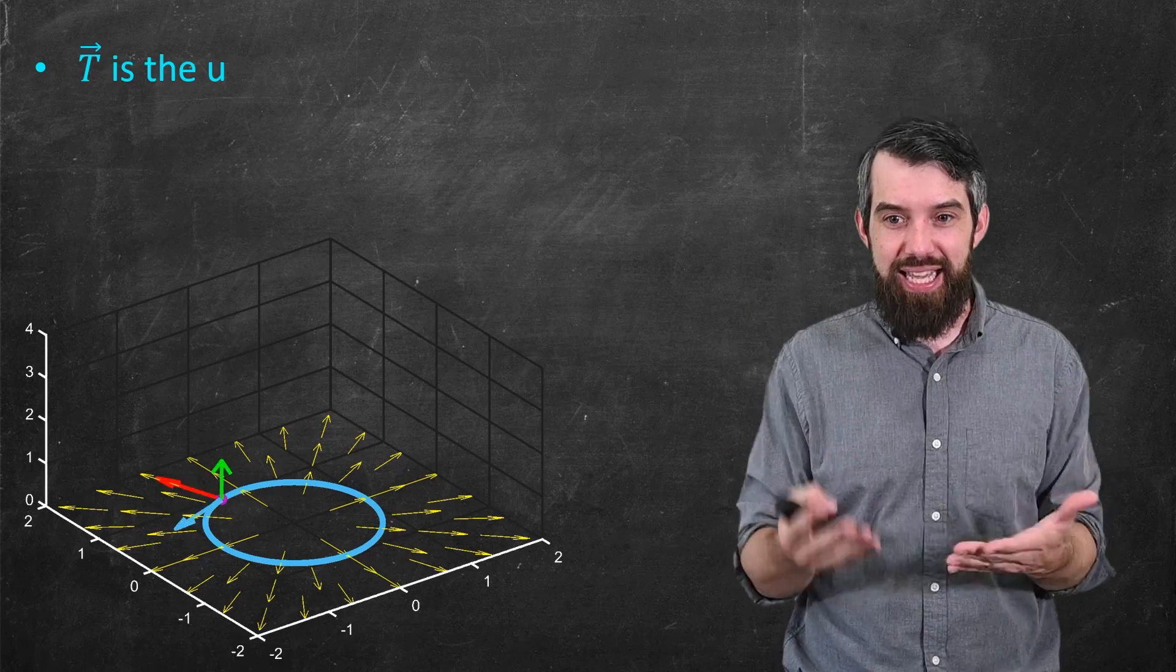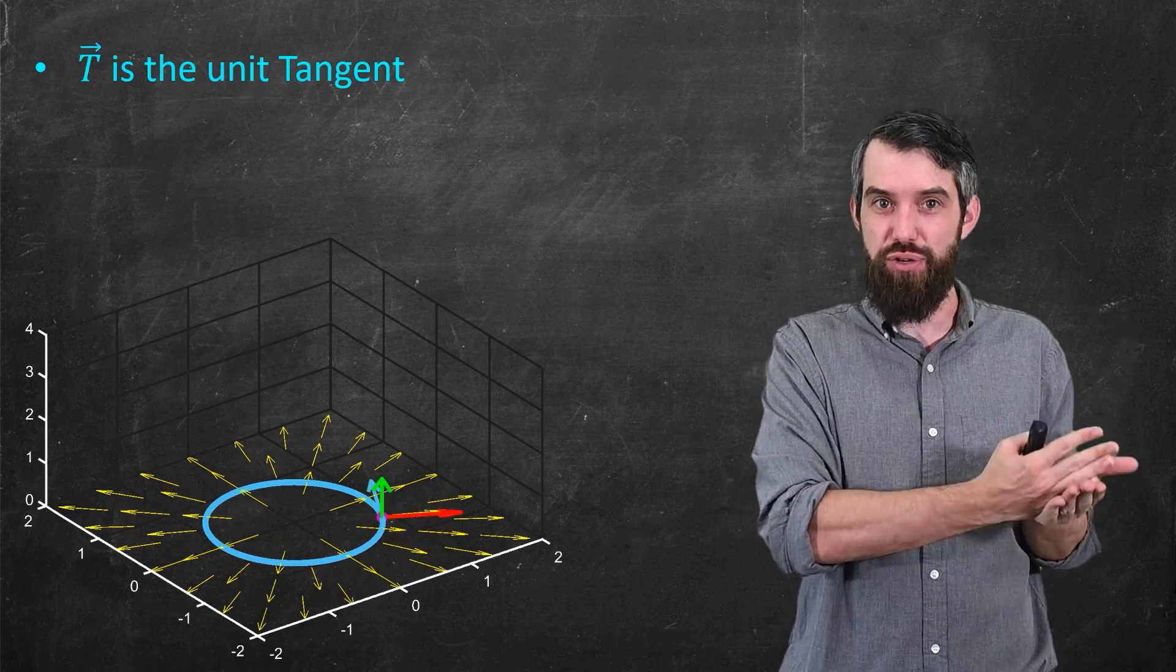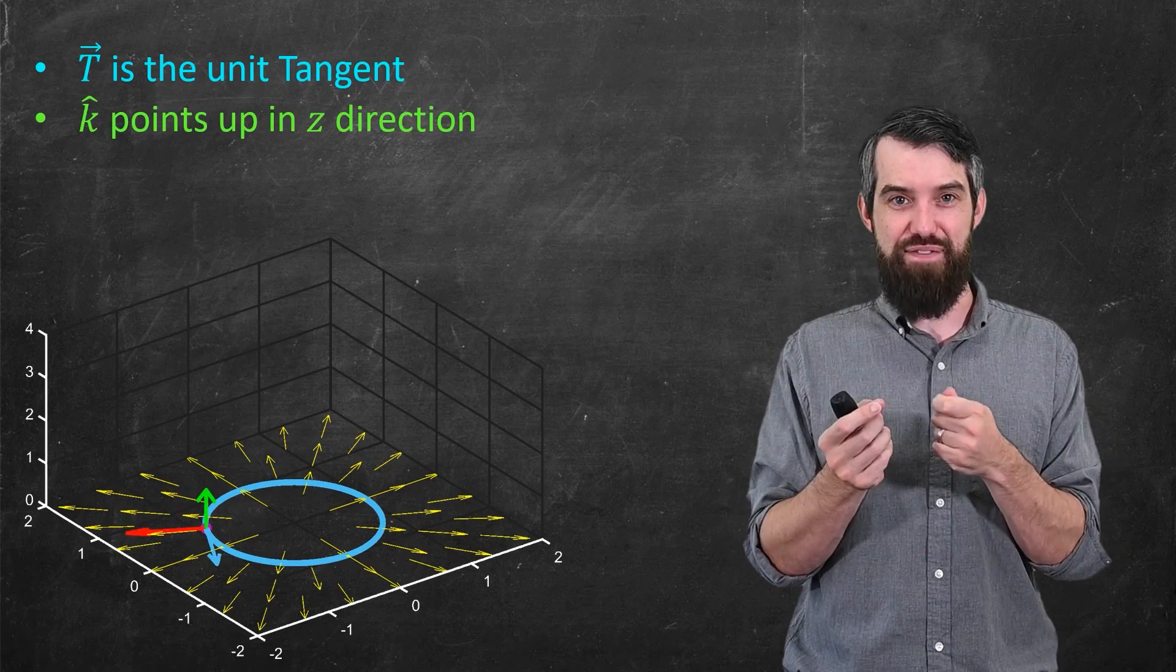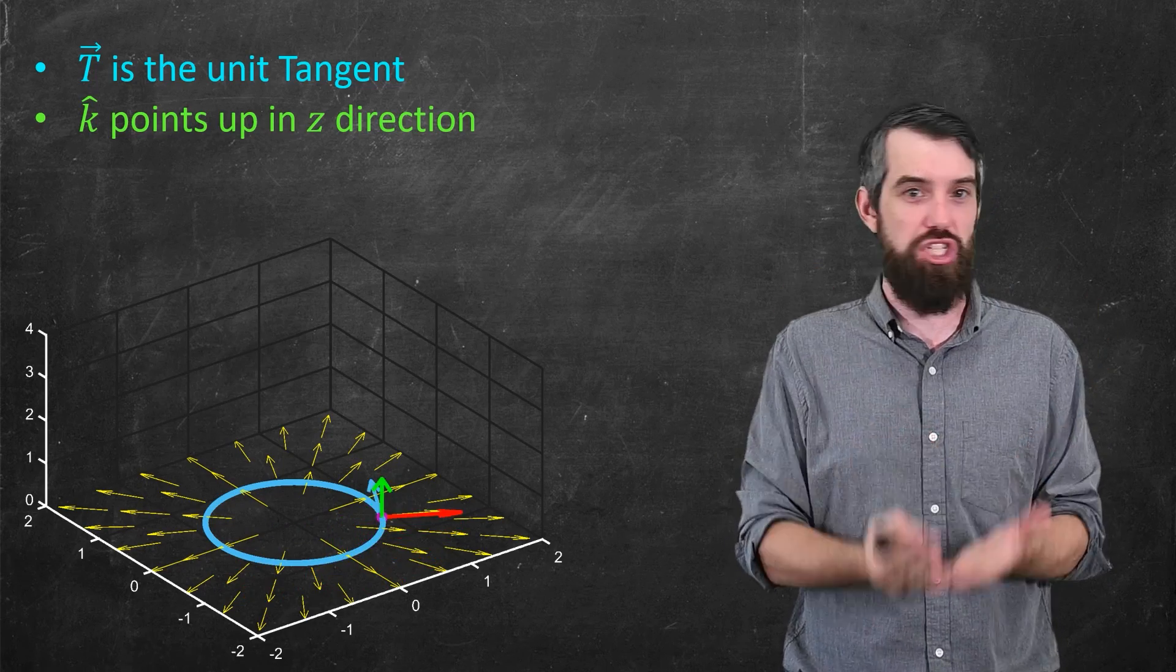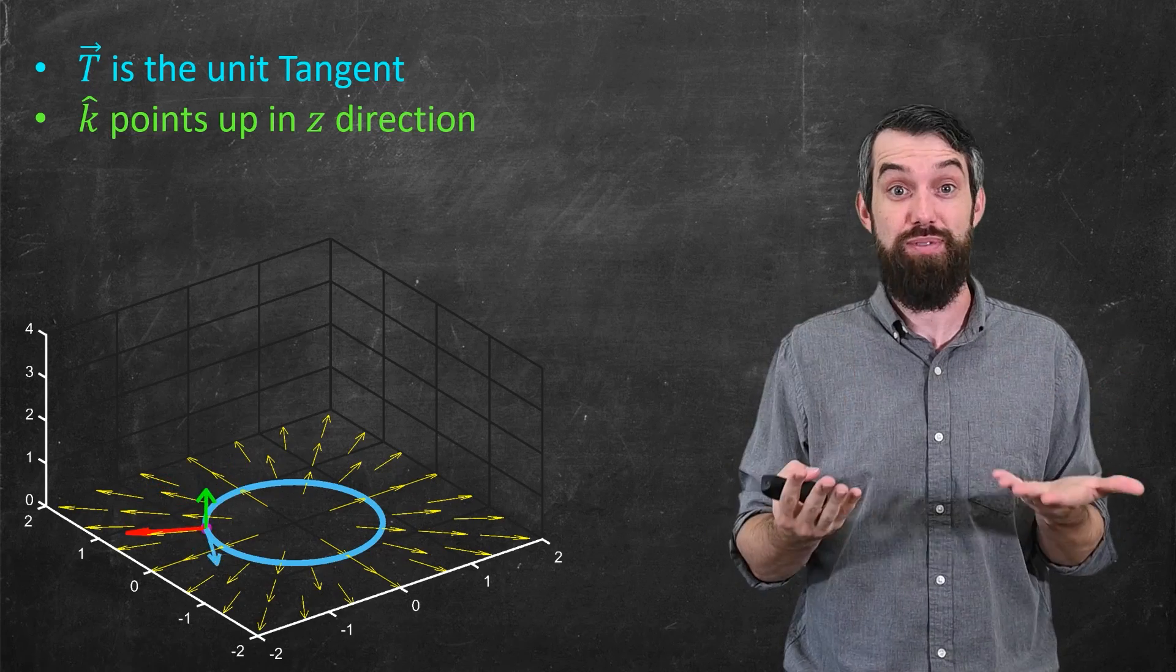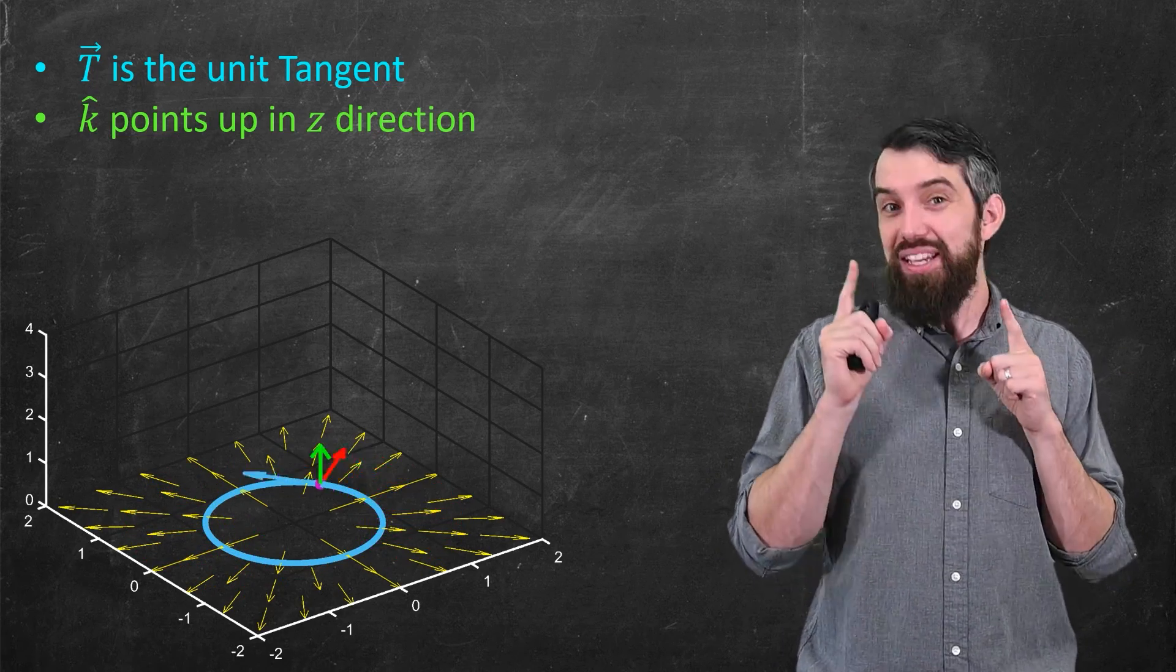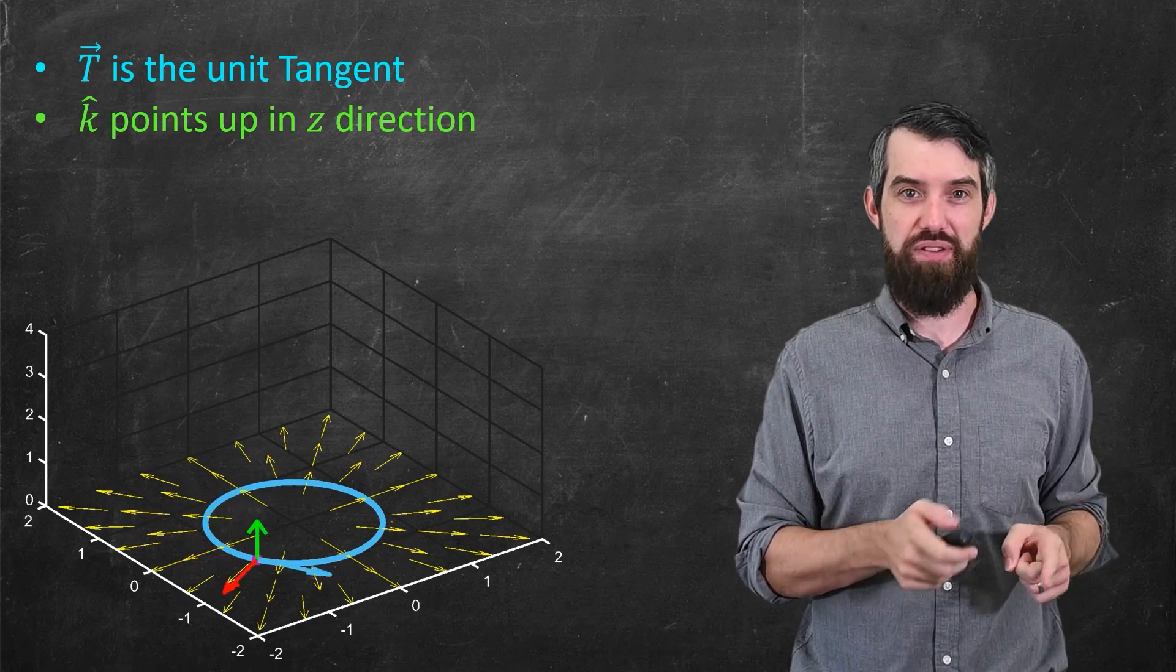And then what I've put up here with my animation is actually three different vectors. Okay, so first is t. t is this blue one. That's the tangential vector. We've seen that before. We understand tangential vectors. Then secondly, the k-hat vector is my green one. And I know what k-hat is. k-hat is a vector that points just straight up. It's a unit vector straight up in the z direction.